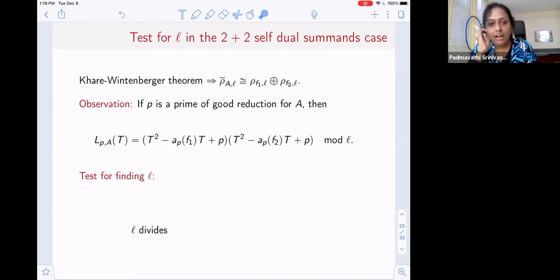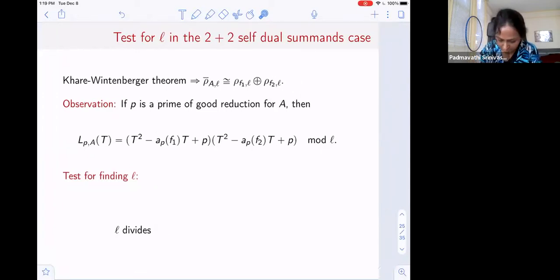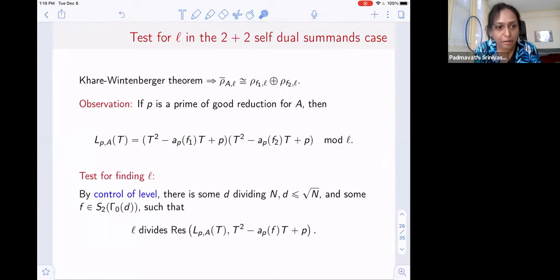Another way of saying this is that if you take one of these polynomials that comes from a modular form, this has to share a root with the L polynomial at P. This is the basis for our criterion. This tells us that there is some modular form, some cusp form, weight two cusp form. We can also say what its level should be. Its level can be at most the square root of N.